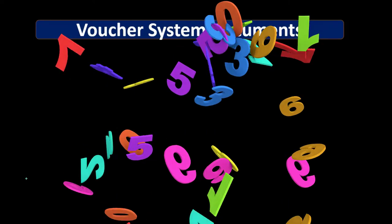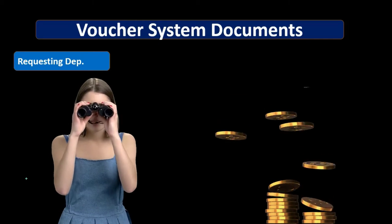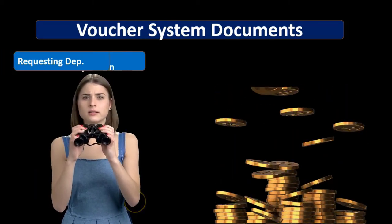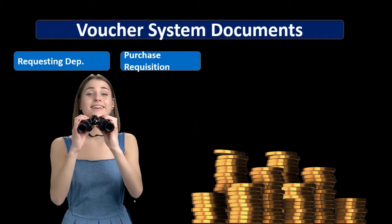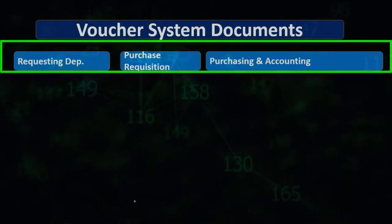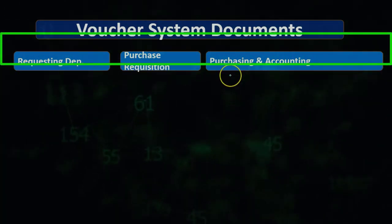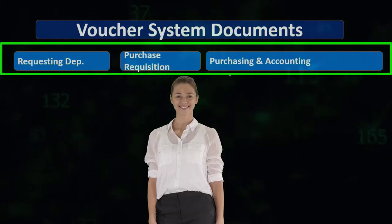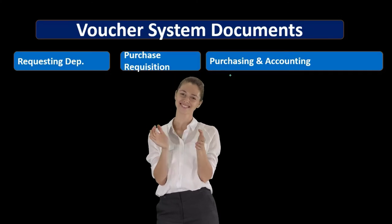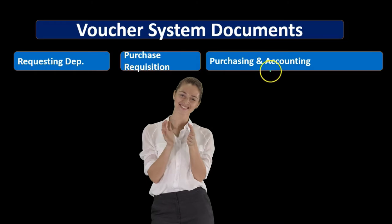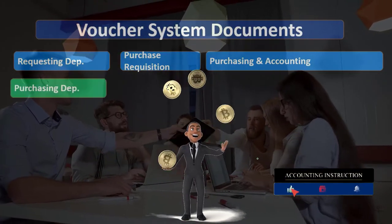A voucher system example may look something like this. We might have some department requesting a purchase — something needs to be purchased, so a department makes a request. We'll have the form of a purchase request going to the purchasing department and the accounting department. The purchasing department is typically its own department, the only one authorized to approve the purchasing process, and the accounting department will ultimately record the information into the system.